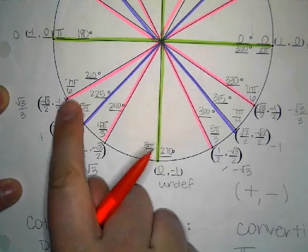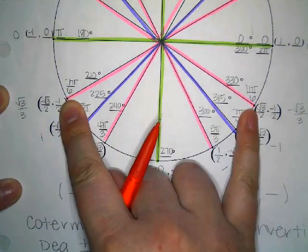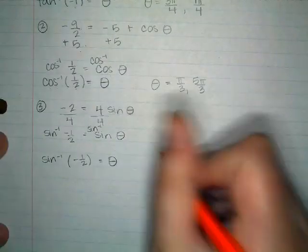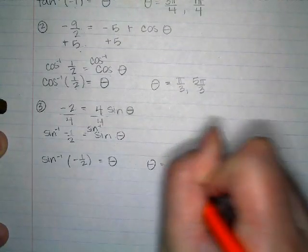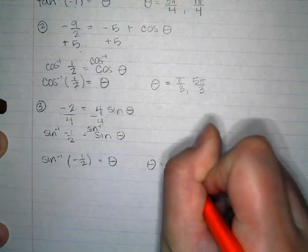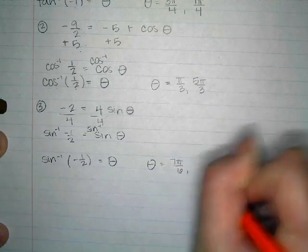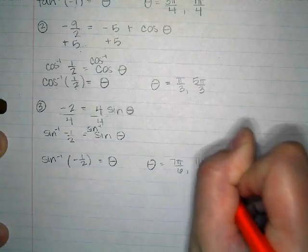Y-coordinates that are negative 1/2 — that gives us 7π/6 and 11π/6. So theta equals 7π/6 and 11π/6.